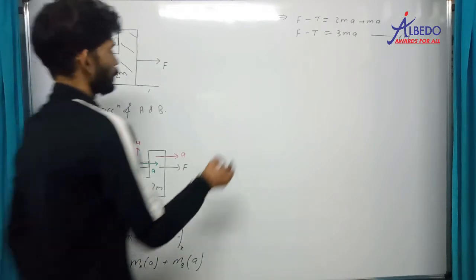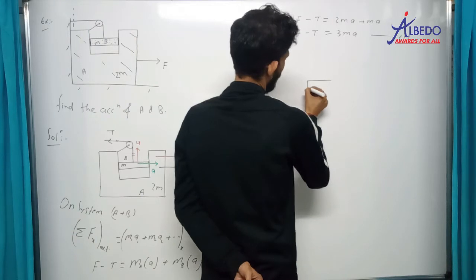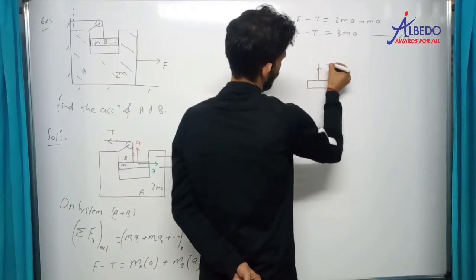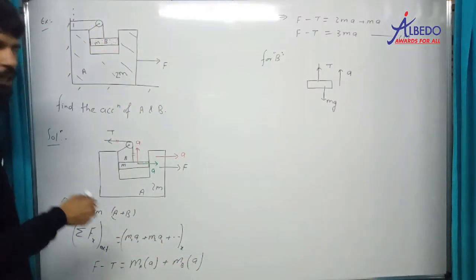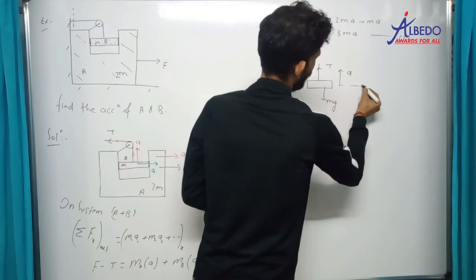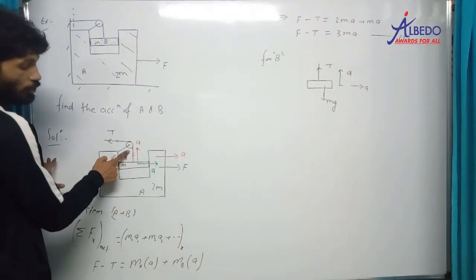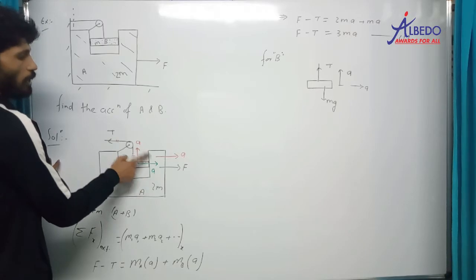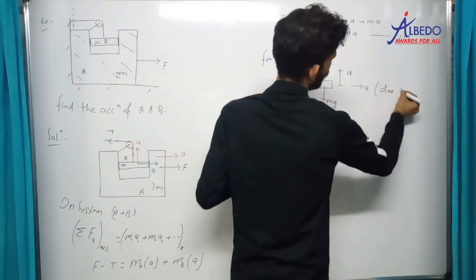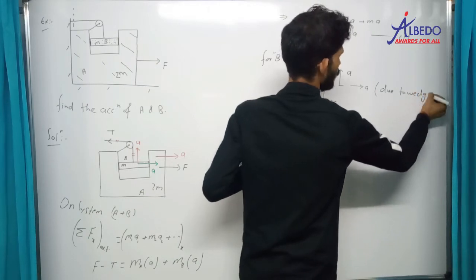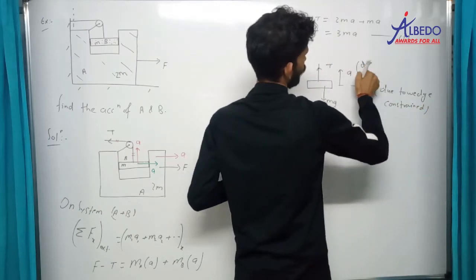अब हम लोग B के लिए लिखते हैं. B का free body diagram draw करें — यह रहा आपका tension. हम इस पर focus कर रहे हैं vertical में, horizontal में नहीं. यहाँ जो सबसे ज़्यादा crucial बात है वो है यह constraint का relation — यह due to wedge constraint है, and this is due to string.